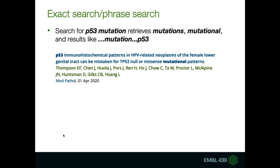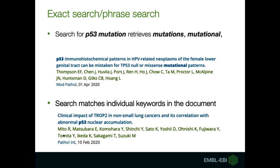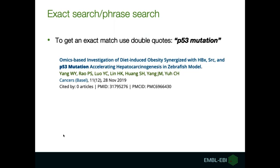Your search results are also expanded in other ways. For example, a query for P53 mutation will include the terms mutations, mutated, and mutational, and this happens automatically — switching synonyms on or off will not affect this. In addition, the search matches individual keywords in the document but is not sensitive to the distance between them. So P53 might be found in the introduction, mutation in the methods, and DNA damage in the conclusion. So if you want to match a word or phrase exactly, we suggest putting it in double quotes when you search. This way, the search will return only articles where 'P53 mutation' appears as a phrase.